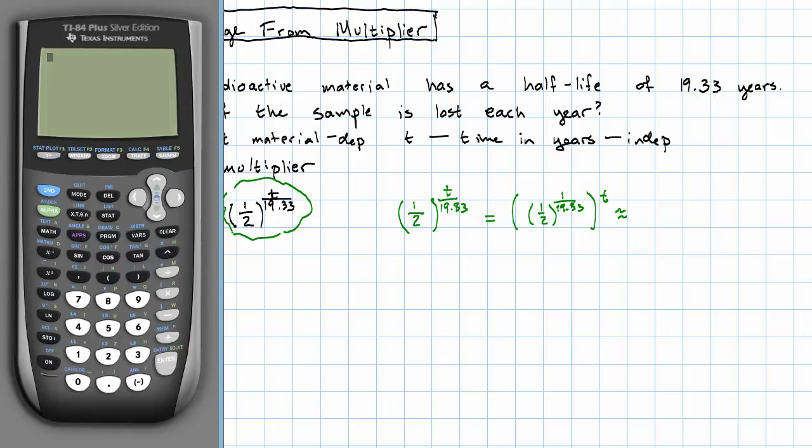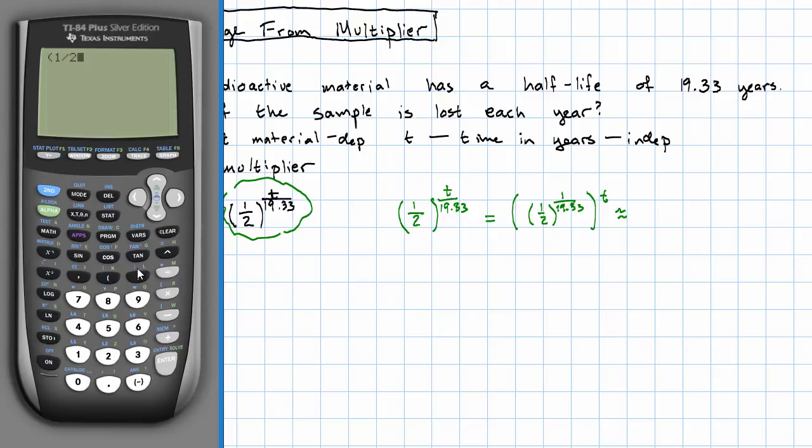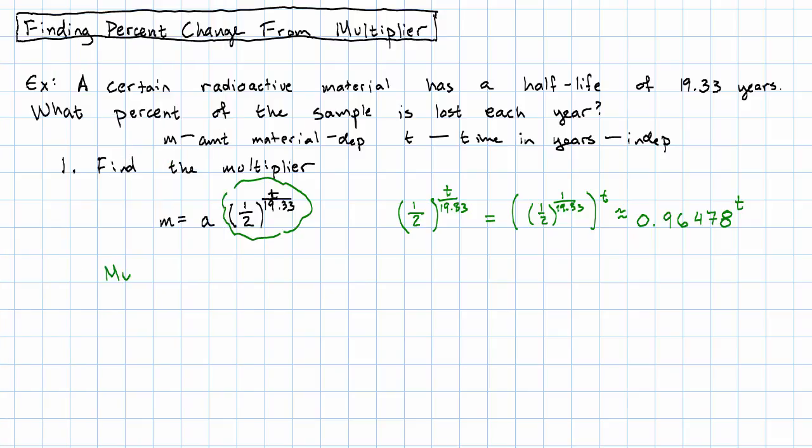Using the calculator now, we have a half to the one over 19.33. So that's about, I'm going to carry like five decimal places, 0.96478 to the t. So the multiplier is 0.96478.